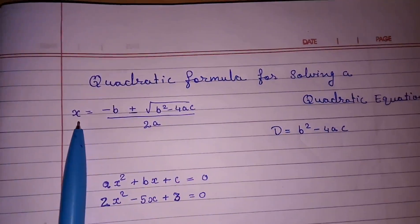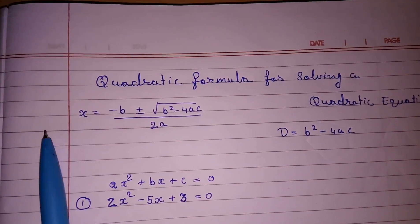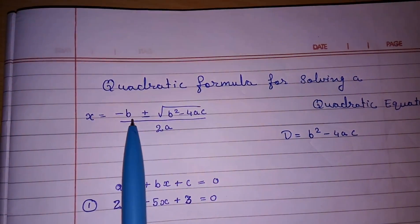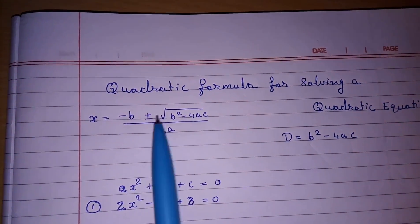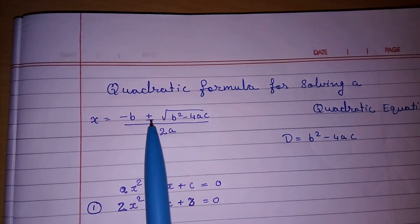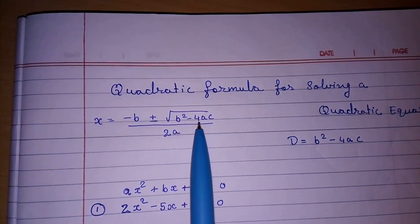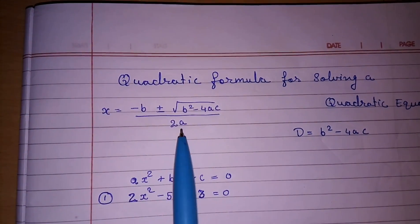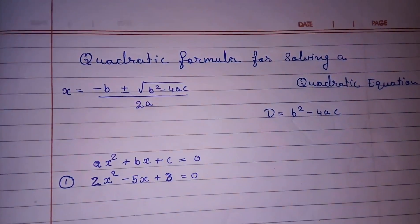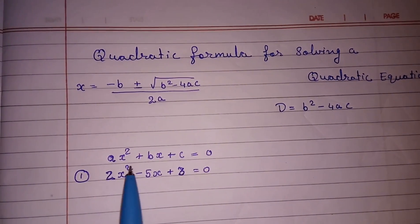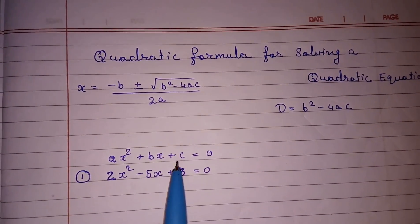So first of all again I am repeating the formula. The formula for finding quadratic equation solutions are x = -b plus or minus (means two times, one time we will take plus, one time we will take minus) under root b² - 4ac upon 2a. So before starting first we should know what is a, what is b and what is c.